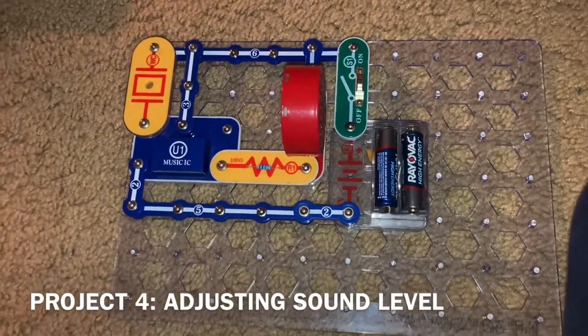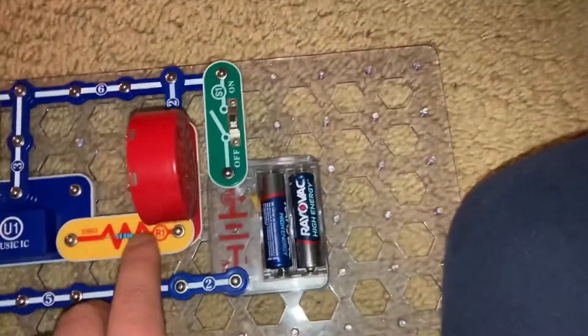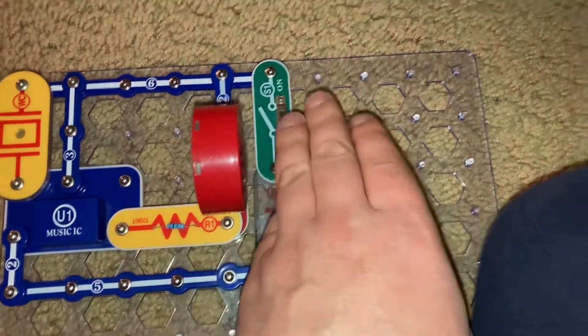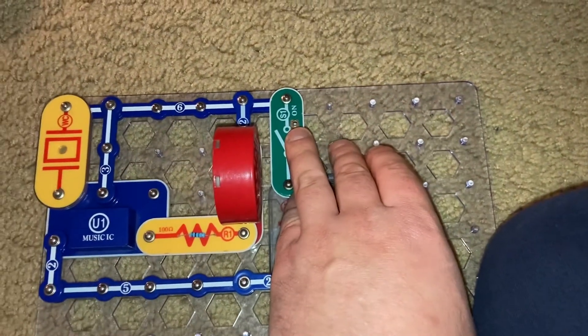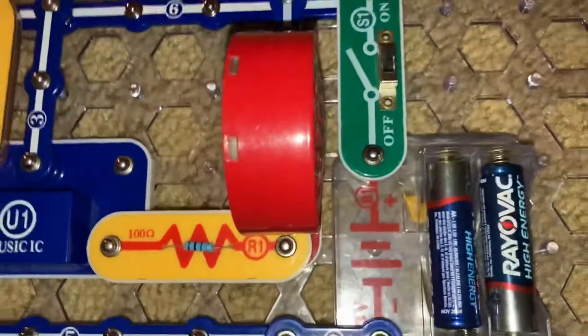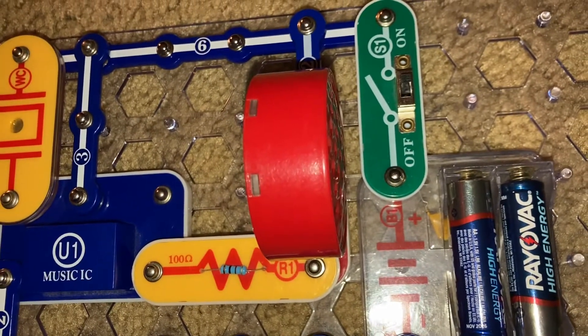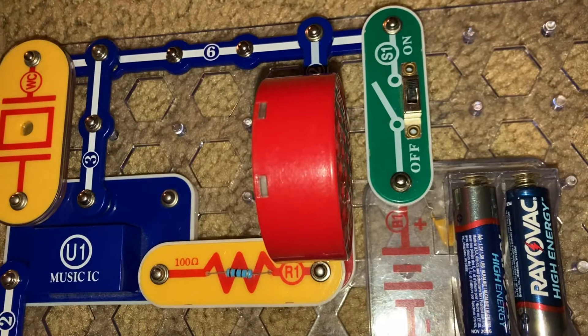Project four is adjusting sound level. As you can see, I put the R1 resistor here, and when I turn on the slide switch, the sound, the music is not as loud as in the previous project.